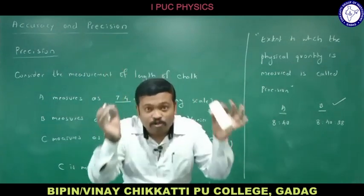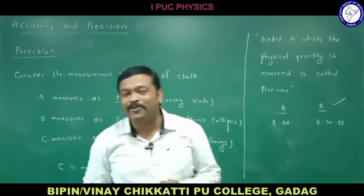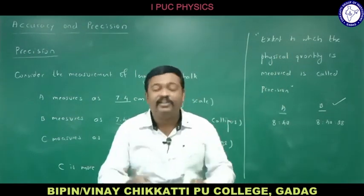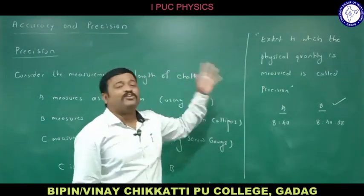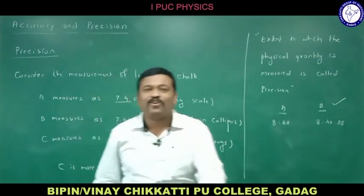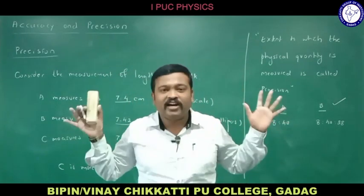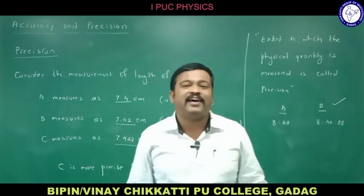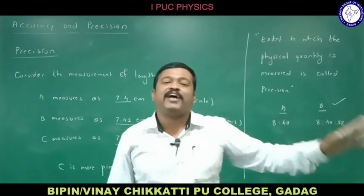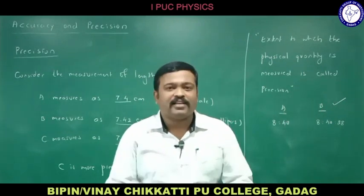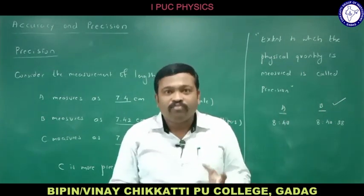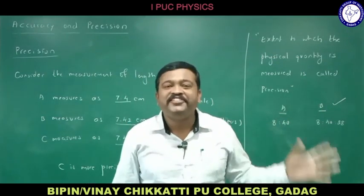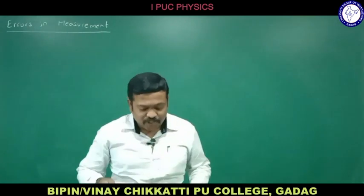To summarize: accuracy is the closeness of a measured value to the true value, while precision is the extent to which a physical quantity is measured. Whenever we measure a physical quantity, our readings must be both accurate and precise.